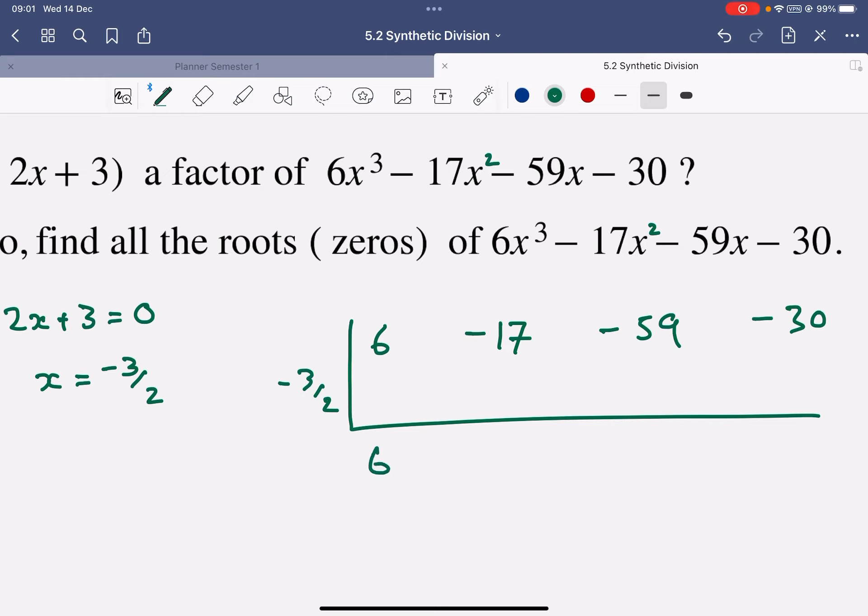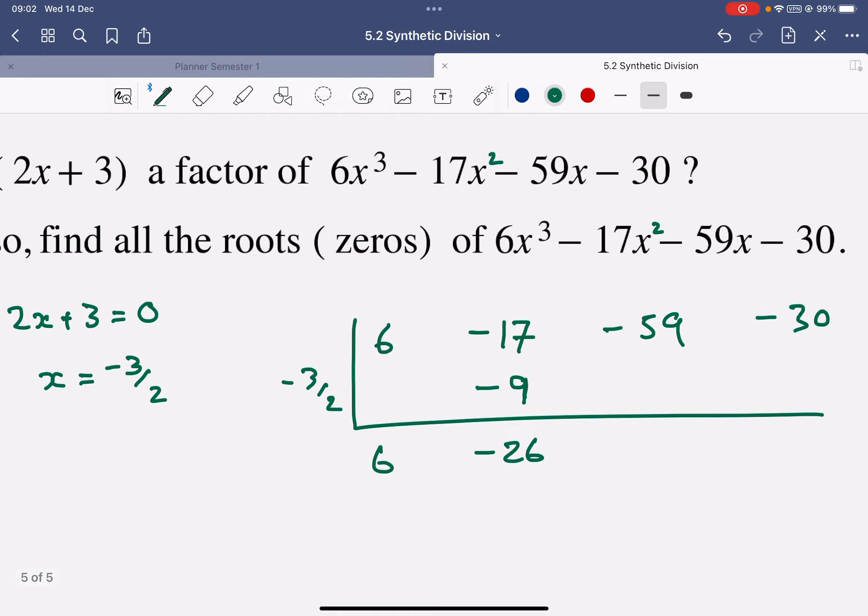Now we're doing this negative 3 over 2. Let's copy that first one down, which is a 6. Let's multiply negative 6 by negative 3 over 2 and we're going to get negative 9. Add those together, negative 26. Times by 3 and divide by 2 is going to give me 13, 39.